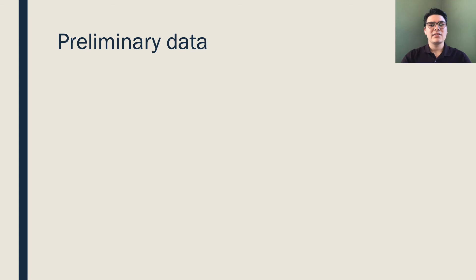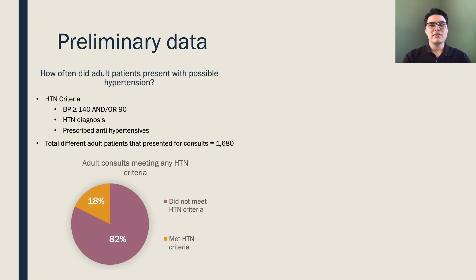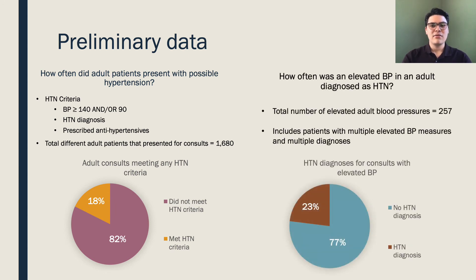Currently, we've begun by analyzing data from the yearly clinics held in San Lucas in order to determine the burden of hypertension within the community. Some of our preliminary data suggests that one in five patients who presents to the yearly clinics meets one or more criteria for hypertension. Another important finding showed that a majority of patients who presented to the clinic with elevated blood pressures did not have a diagnosis of hypertension listed for their visit. While further analysis is required, our preliminary data suggests there could be a gap in screening and management of hypertension within the community of San Lucas that could be filled by the promotores de salud already in the community.